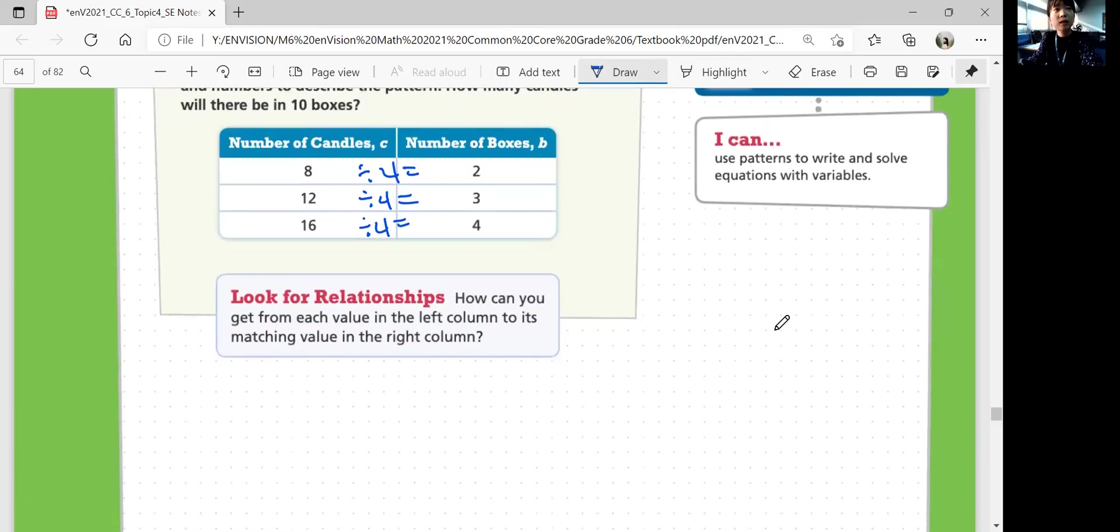So what's the pattern? How can we describe that? Divide each value of C by 4 to get B is what we did. So C divided by 4 is equal to values of B.